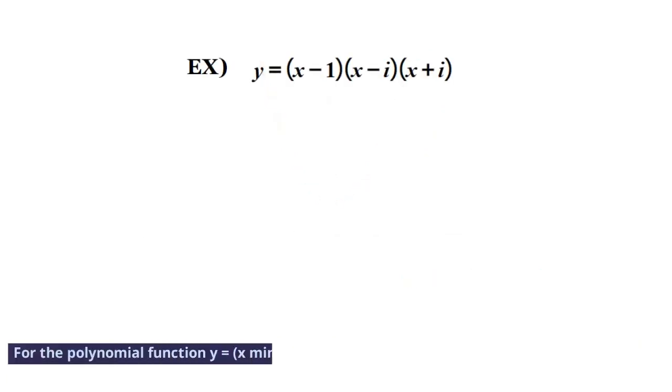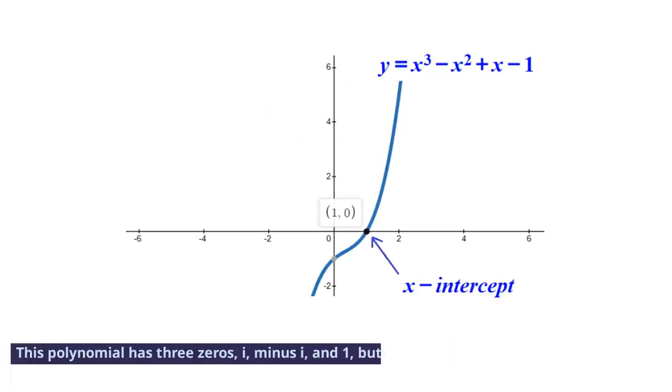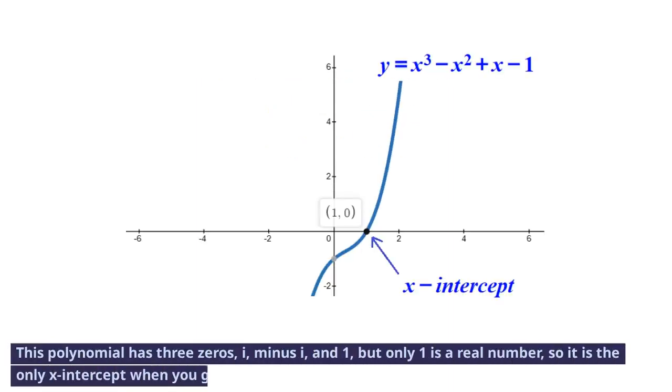For the polynomial function y equals (x minus 1)(x minus i)(x plus i), we expand it to x cubed minus x squared plus x minus 1. This polynomial has three zeros: i, minus i, and 1, but only 1 is a real number, so it is the only x-intercept when you graph it.